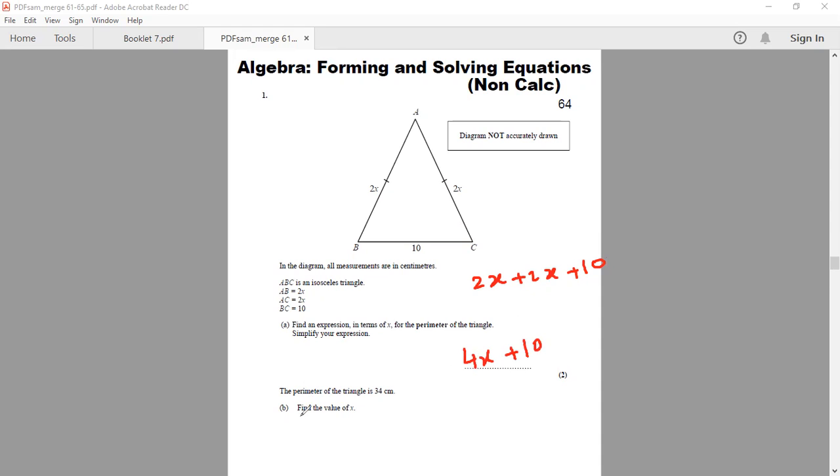Moving to the next part of the question, it says, the perimeter of the triangle is 34 centimeters. Find the value of X.